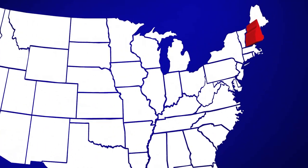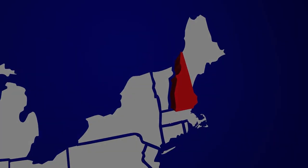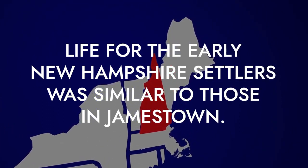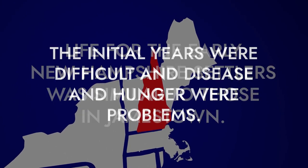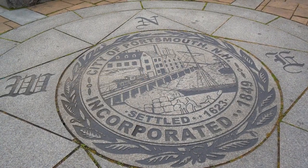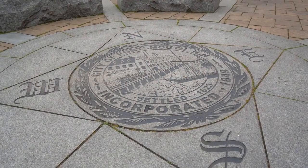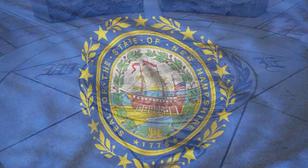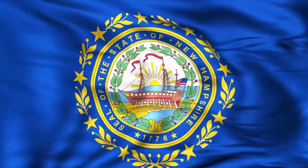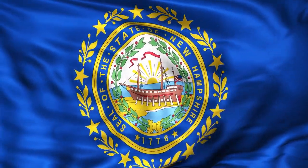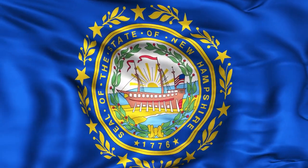New Hampshire was the third colony in the New World. Life for the early New Hampshire settlers was similar to those in Jamestown — the initial years were difficult, and disease and hunger were problems. The New Hampshire colony was known for fishing and shipbuilding, and the colonists learned to use whales for oil and other things of value. In 1641, the New Hampshire colony was taken over by the Massachusetts colony, but they regained their freedom in 1741.